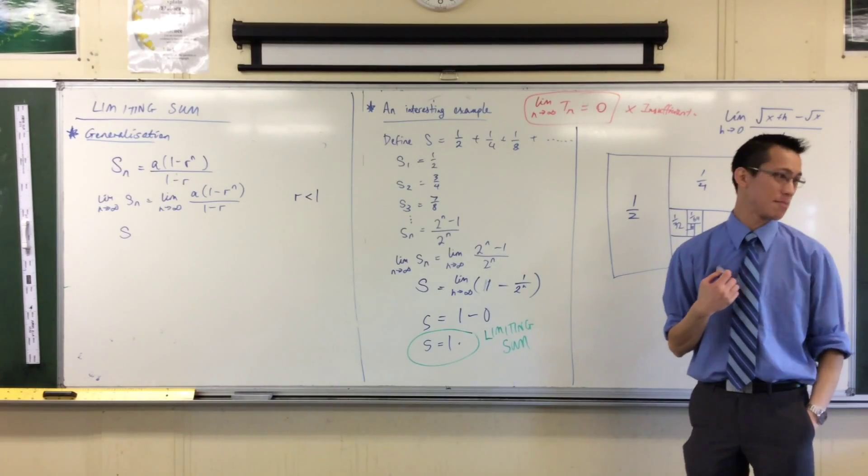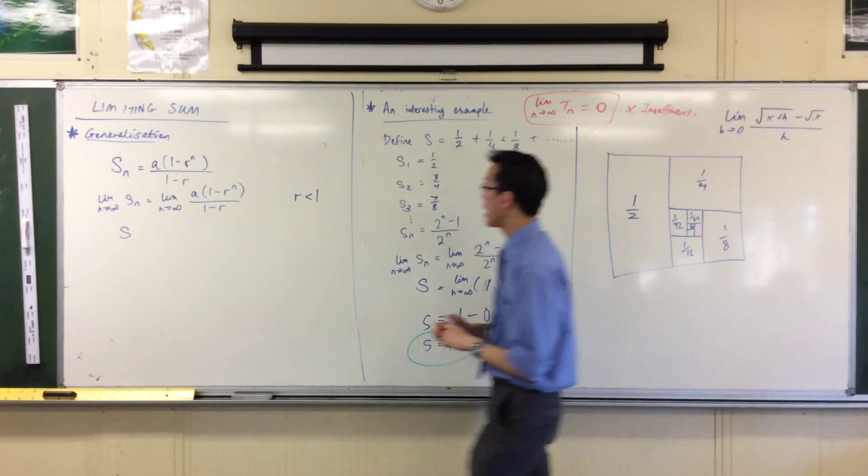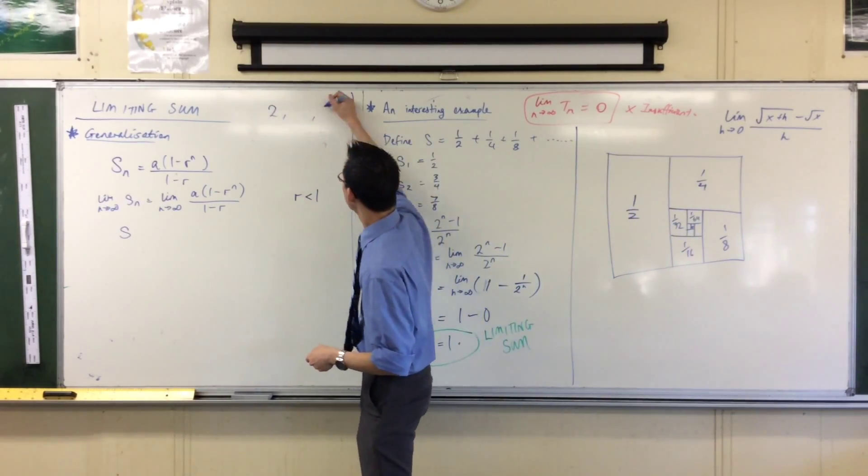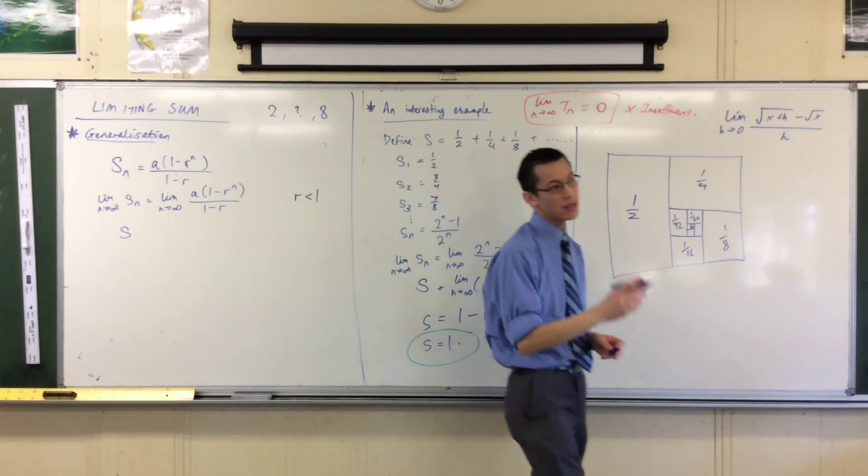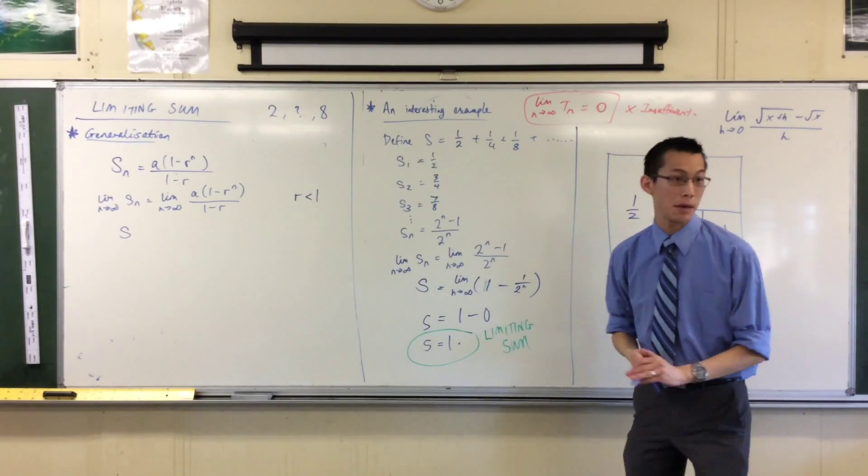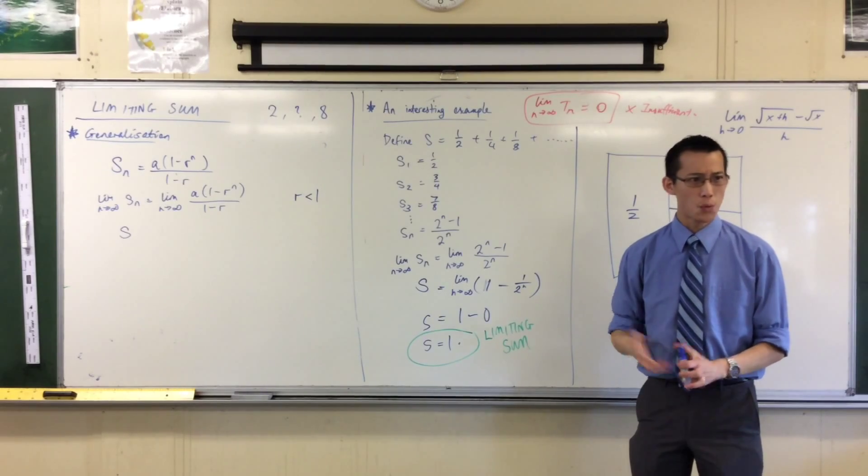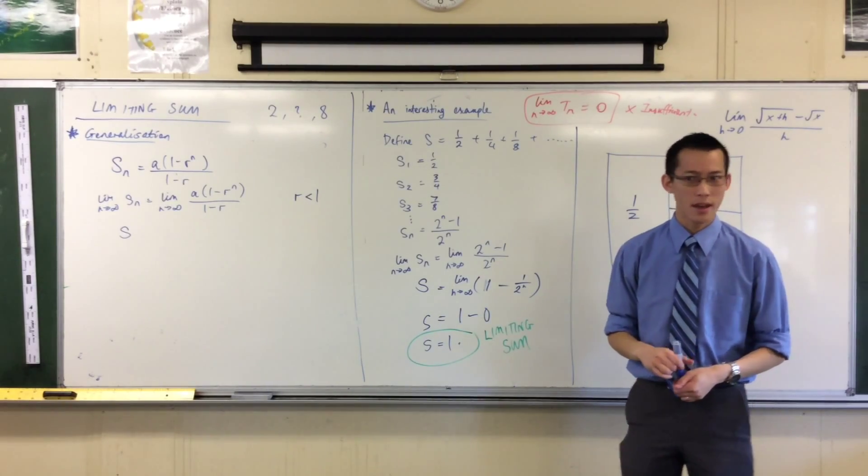Do you remember when we were having a look at geometric means, and I said if I gave you this series, there's a number you can insert in there that will make that a GP. Do you remember that? What is the GM of this particular sequence? Minus 4.